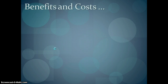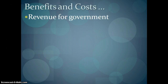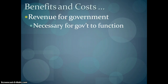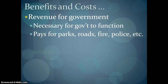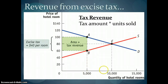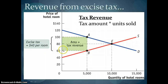Why do a tax if it creates inefficiencies in the market? Largely because it brings in revenue for the government. They have to pay for all sorts of different things people want — like parks, roads, fire, police, schools, etc. — so this is one way to raise money. We can look at the graph and say that with a $40 excise tax, we look for the tax wedge — the place where there's a $40 gap between demand and supply. In this case, that's 5,000 hotel rooms. The total tax amount times the number of units sold gives you the tax revenue, represented by the area of this rectangle.